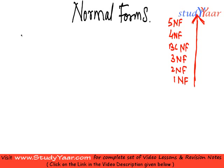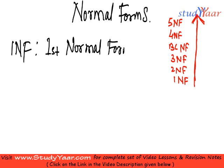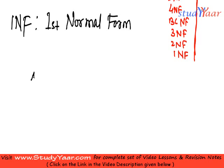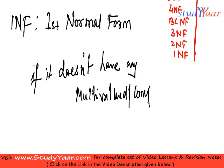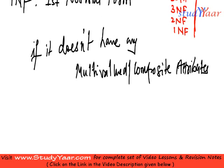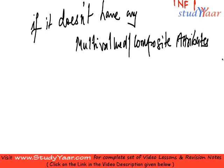First we are going to study what is 1NF, or first normal form. First normal form tells me a relation is in first normal form if it does not have any multi-valued or composite attributes. If this is so, then my relation is in first normal form. It helps me eliminate redundancy.